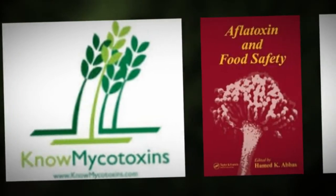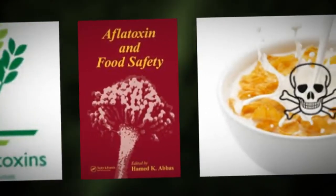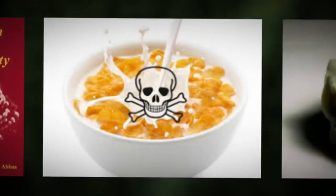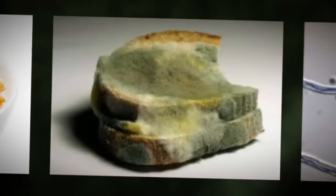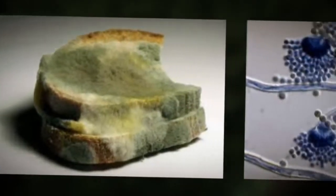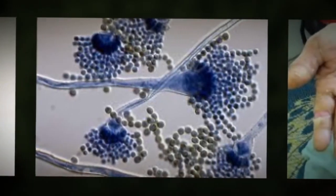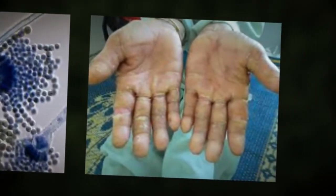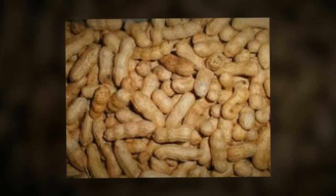What are aflatoxins? Aflatoxins are toxins produced by species of fungi such as Aspergillus flavus and Aspergillus parasiticus. These aflatoxins are potent toxins which are carcinogenic, mutagenic, and immunosuppressive agents, produced as secondary metabolites.